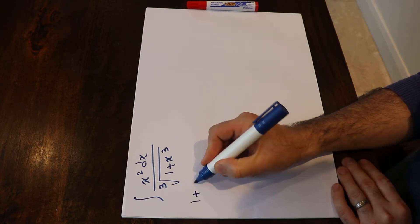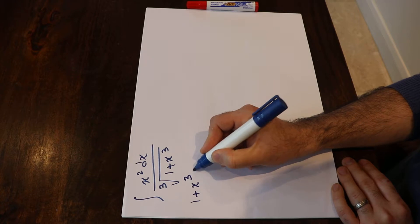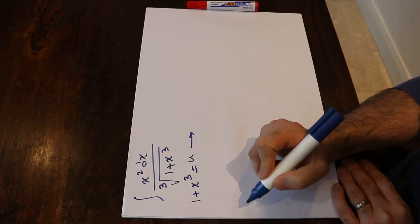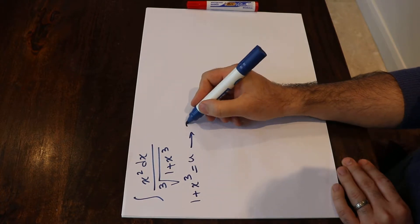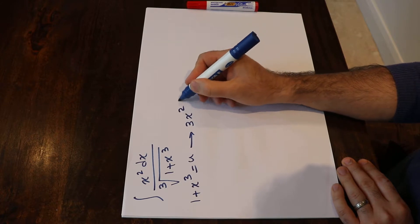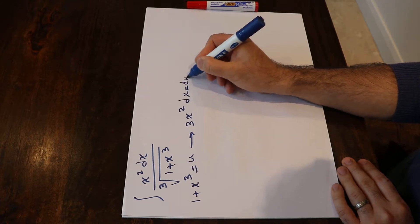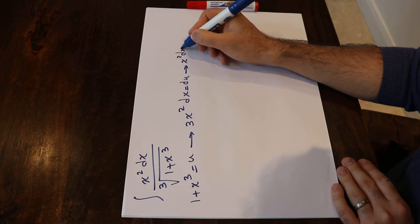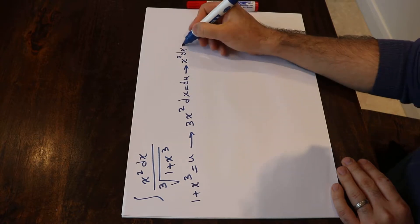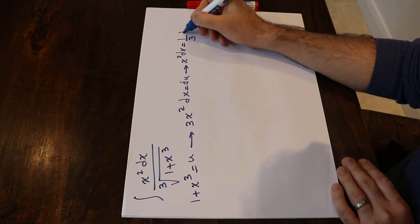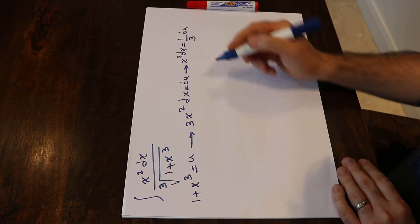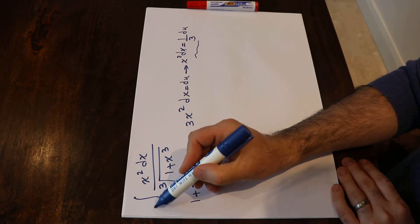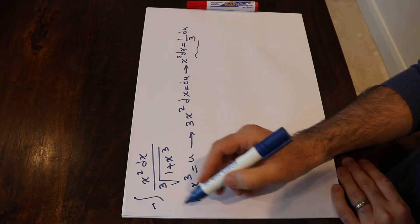If you define u as 1 plus x³ and take the derivative from each side of this equation, you get 3x² dx equals du. Therefore you can write x² dx equals 1 divided by 3 times du.